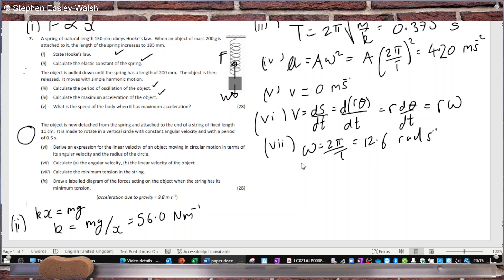And also calculate V. V equals omega times r, so multiply my answer by the radius, which is 0.11. That's 1.38 meters per second.